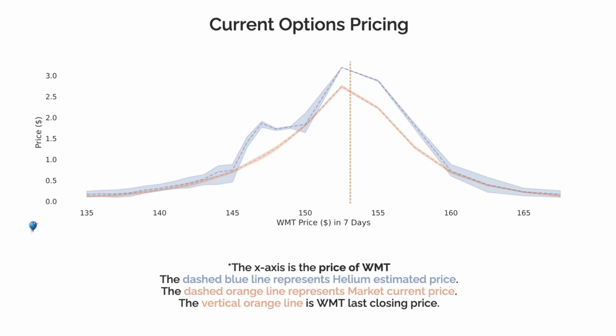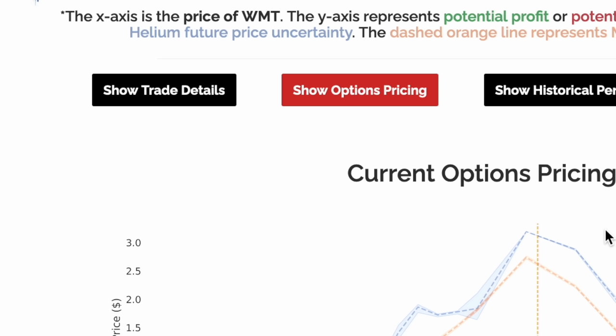Now let's look at options pricing. Helium uses machine learning to predict future options prices. Compare the blue line — Helium's estimated price — with the orange line, the market's current price. If Helium's model is correct, we can take advantage of this potential mispricing.